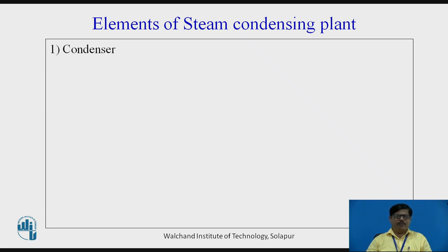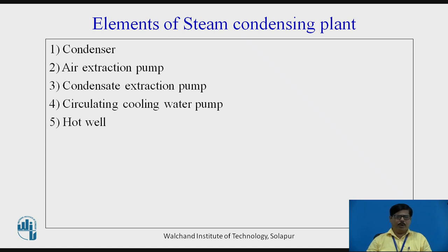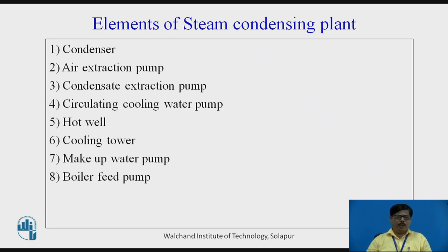Now let us see the various elements of steam condensing plant. There are totally eight elements: first is the condenser, second is the air extraction pump, third is the condensate extraction pump, fourth is the circulating cooling water pump, fifth is the hot well, sixth is the cooling tower, seventh is the make-up water pump, and eighth is the boiler feed pump.